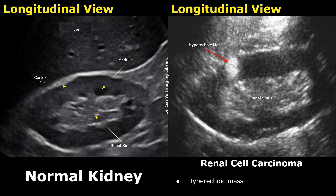This is an image of a normal right kidney in the longitudinal plane. The liver is seen next to the kidney. In the image on the right, a hyperechoic mass is present. This appearance can mimic benign tumors such as angiomyolipomas, which occur in the kidney. However, features such as irregular margins do indicate a malignant lesion, so it is better to evaluate further with a CT scan.